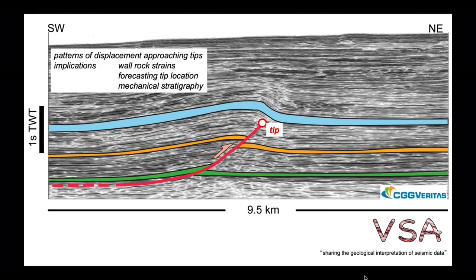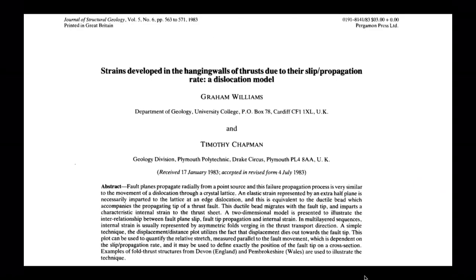Displacement distance diagrams are a way of analysing these variations. We can look at the ways in which the patterns of displacement vary approaching the tips of thrust faults, and we'll use these diagrams to look at the implications of these displacement variations for the strains in the wall rocks. We'll look at a way of forecasting the position of fault tips, then consider ways of investigating the mechanical stratigraphy — the rheological behaviour of the wall rocks. These approaches were set up in 1983 by Graham Williams and Tim Chapman, and we'll be following in their footsteps.